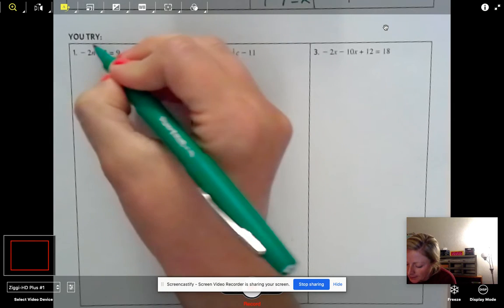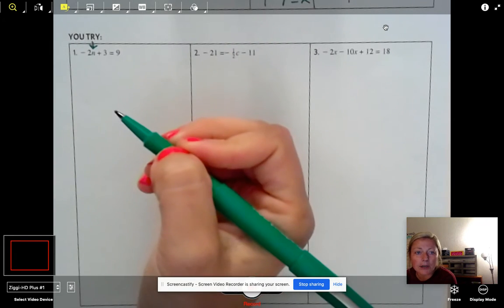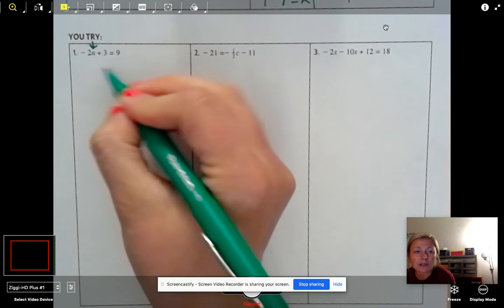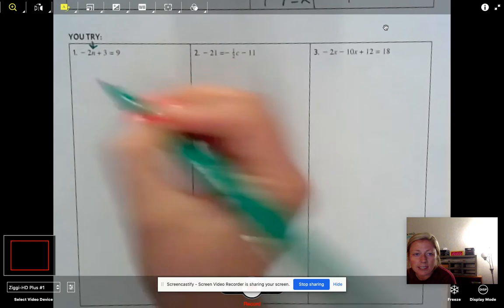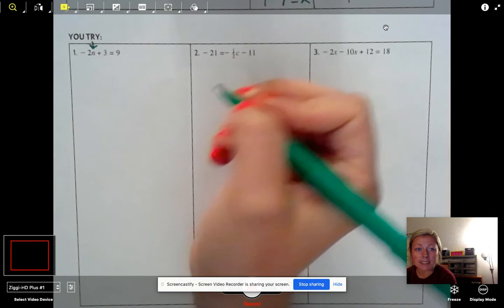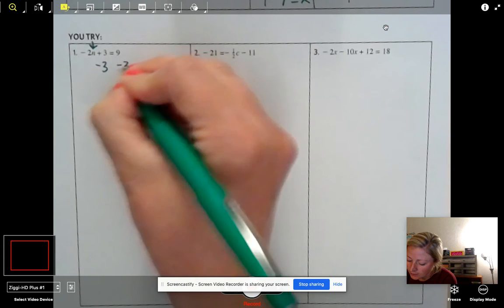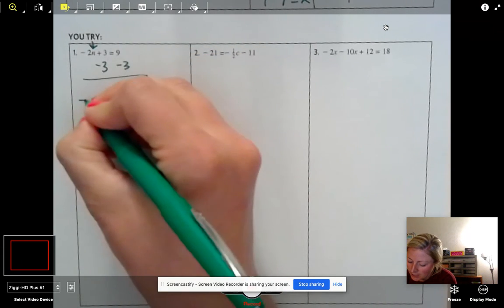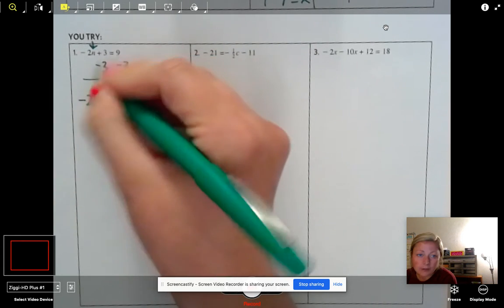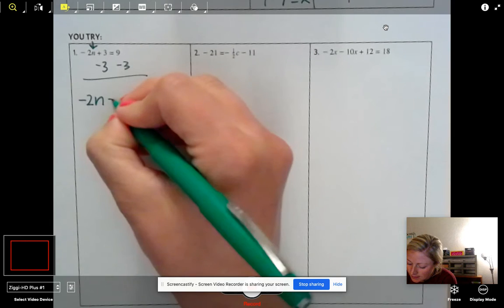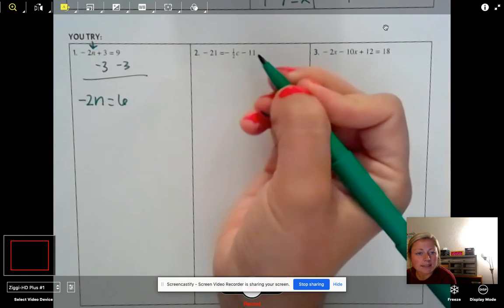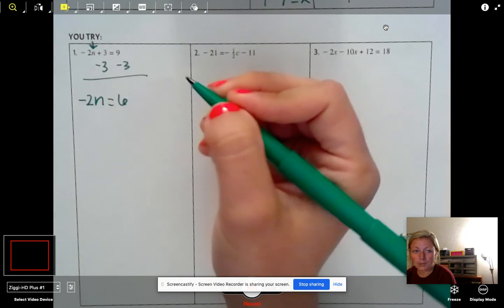Okay. Our job on this one. We want to get n alone. So first we got to get rid of this 3 before I can even touch anything with that 2. So right now I'm adding 3. What's the opposite of adding 3? We subtract 3. Subtract 3. Drop down your negative 2n. Our 3's cancel. 9 minus 3 is 6.